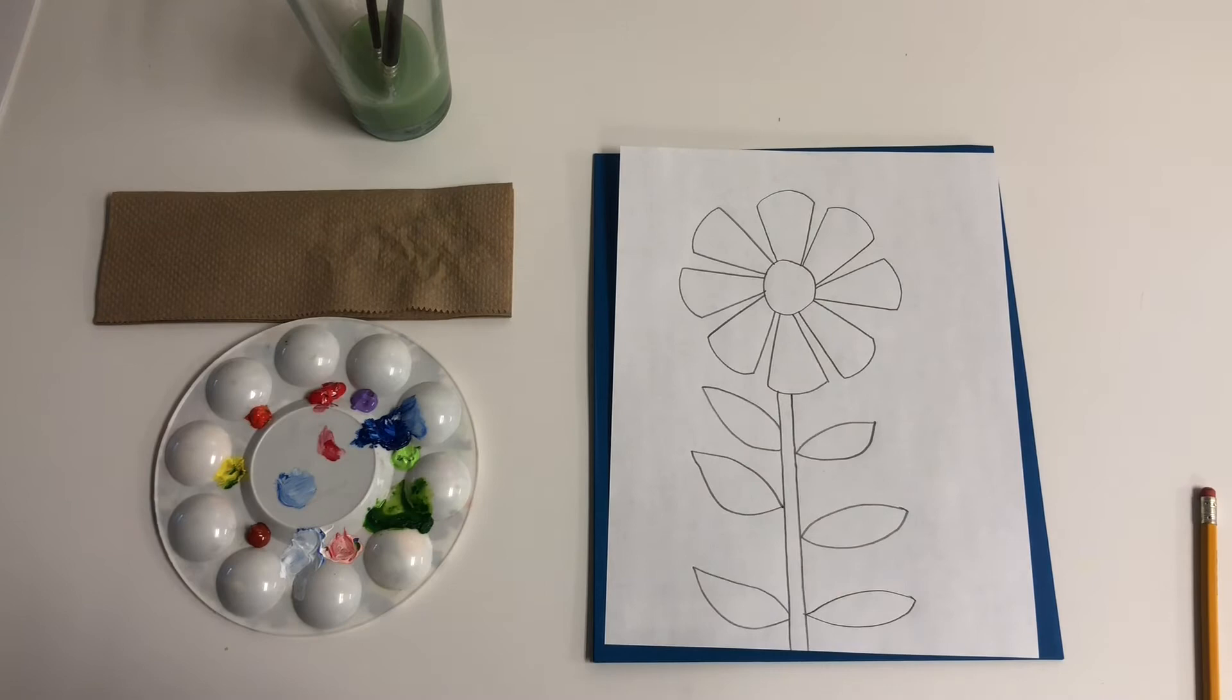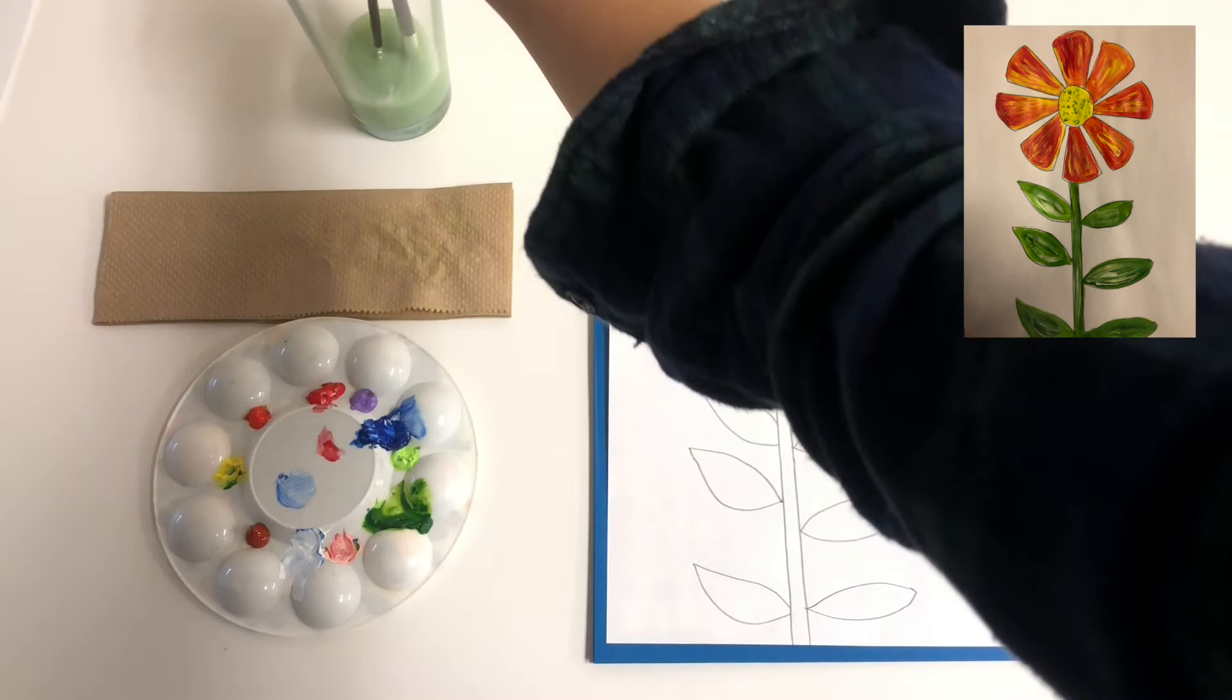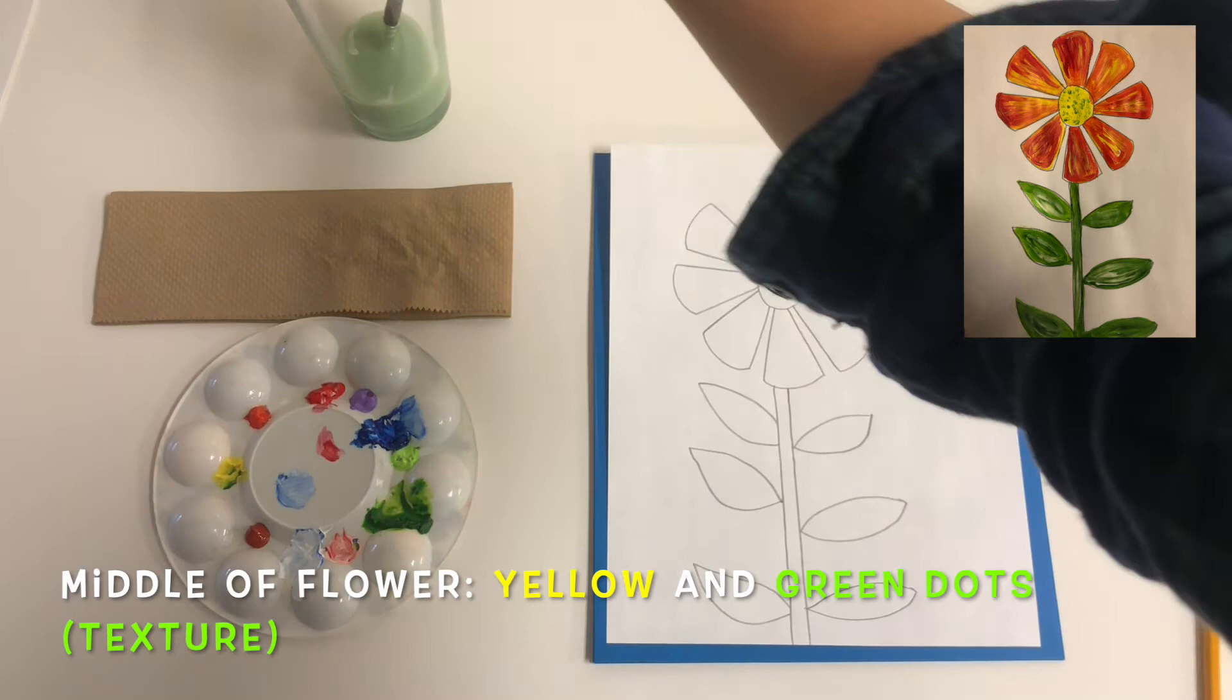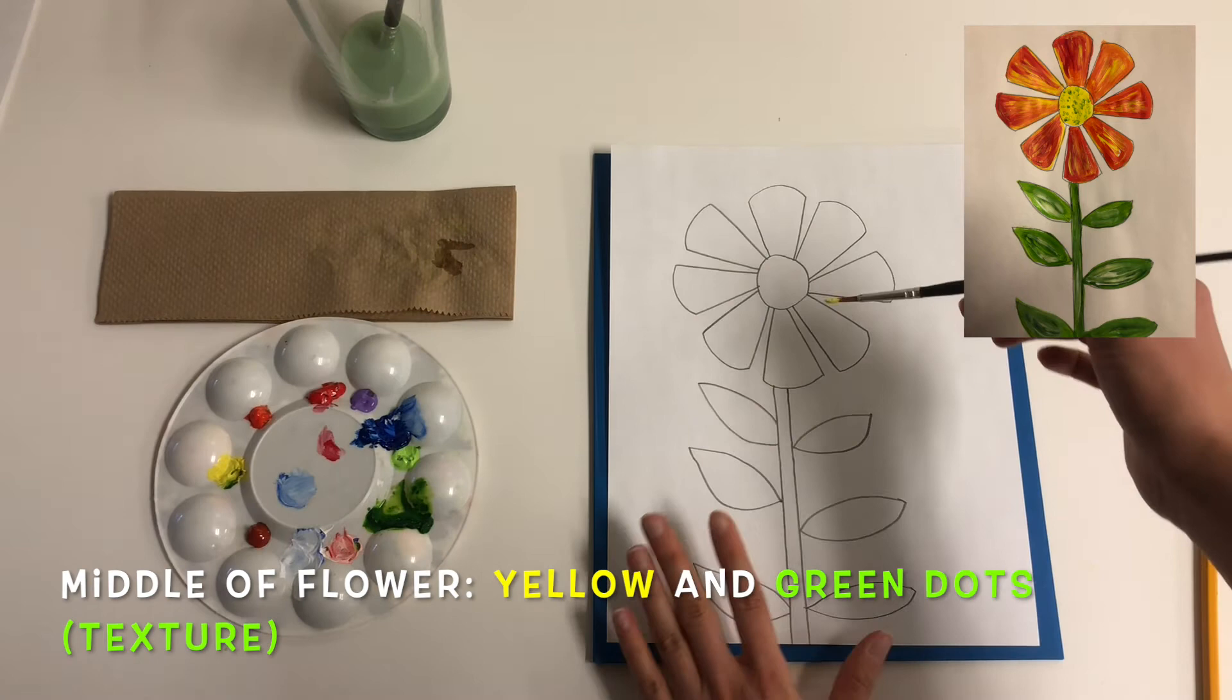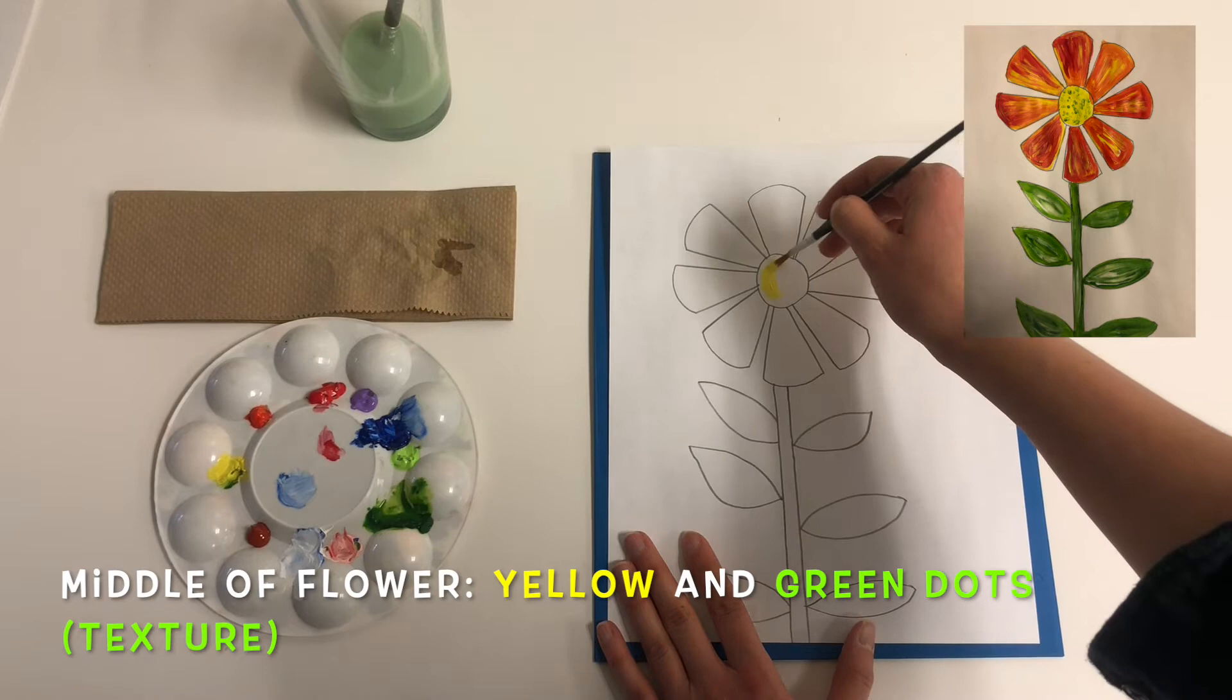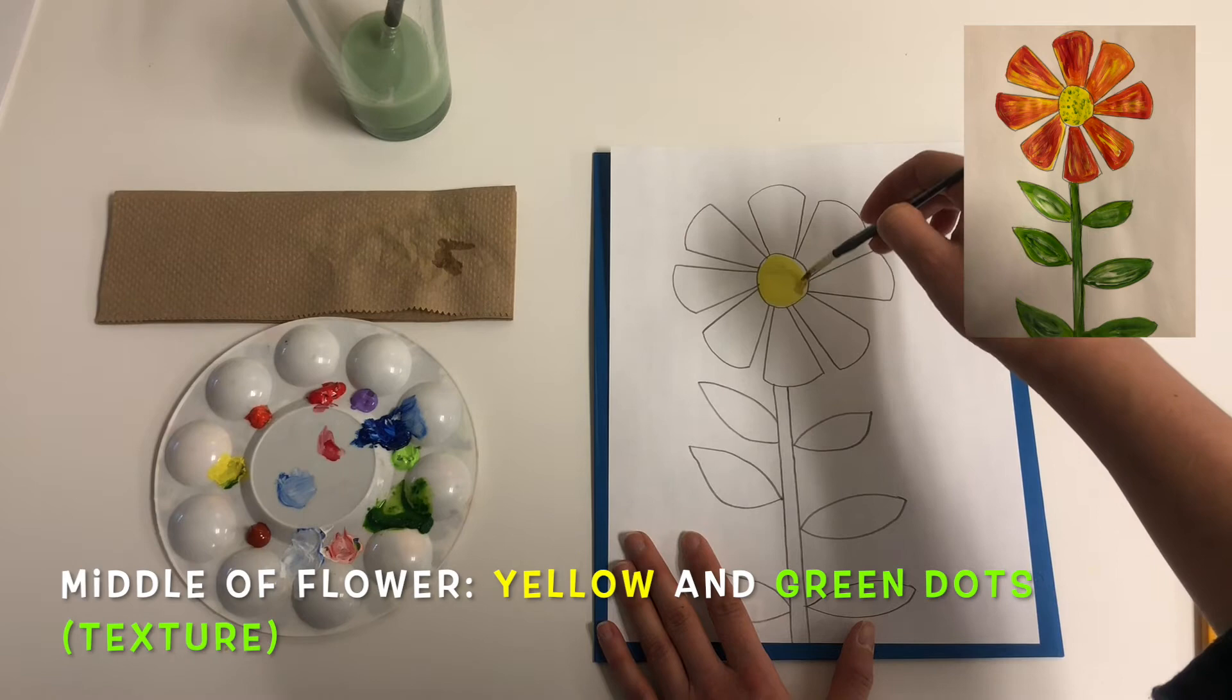Alright, so now that we have drawn our flower we are going to add some color. Now, the middle area of the flower we can paint a yellow color and I am going to use my paintbrush here. I am just going to clean it off, make sure it is ready to go. And I have some yellow over here, I am going to dip my brush into the yellow, I am going to hold my paper tight and I am going to simply paint in the middle of the flower yellow.